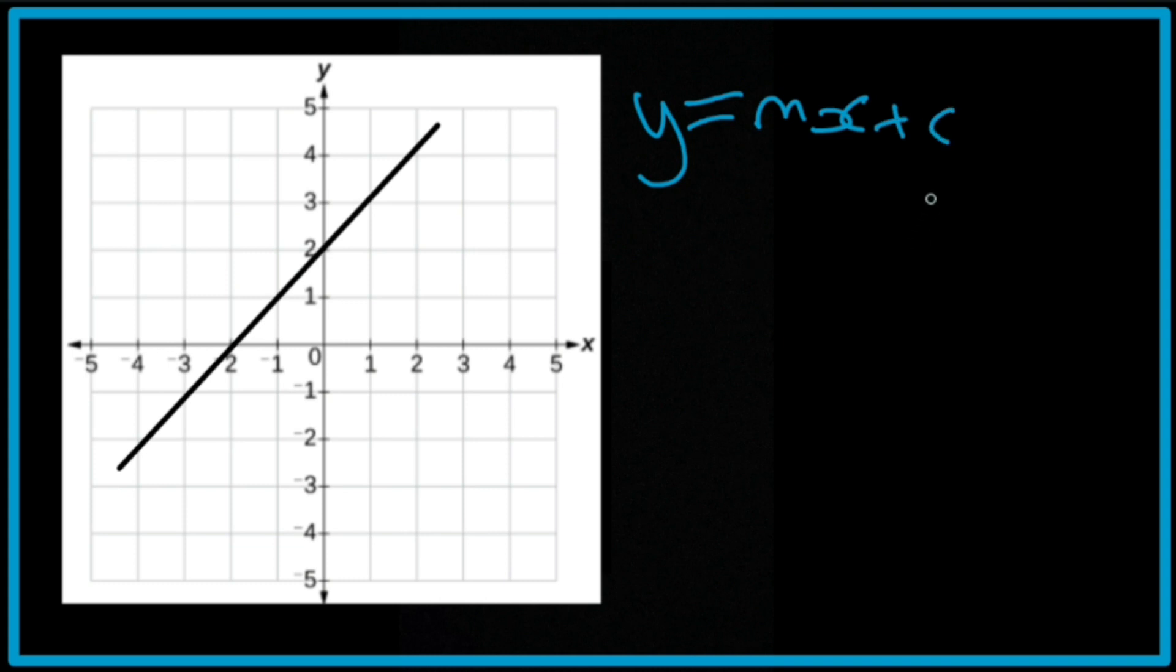So far, we can identify certain things about the line, that being that it's a positive gradient because it's going this way, and the fact that it's cutting through 2 on the y-axis. So it's going to be y equals mx plus 2.